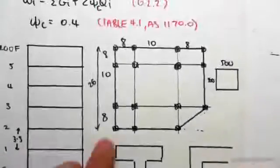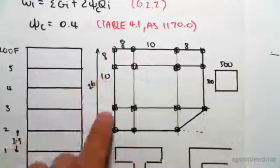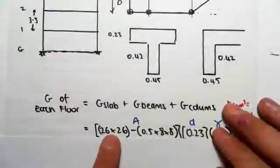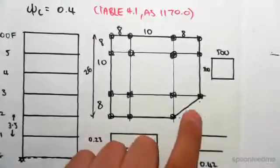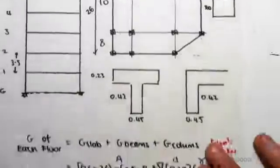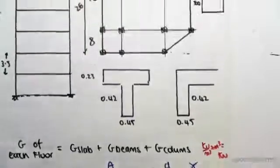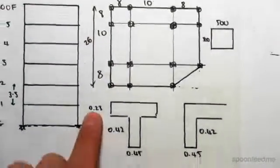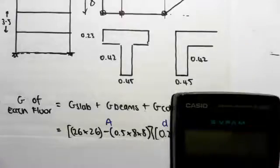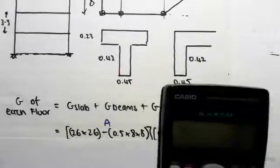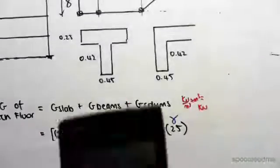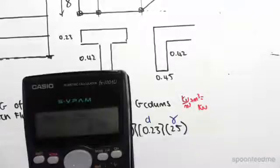So for the slab, this area is 26 by 26, will give us the square, so 26 by 26. We need to subtract off this little triangle, that area of the triangle will be 8 by 8 by 0.5, times by the depth of the slab, which is 0.23, times by the gamma of concrete, which is 25. So working that out, would be 26 squared minus 0.5 by 8 squared times by 0.23 times by 25.